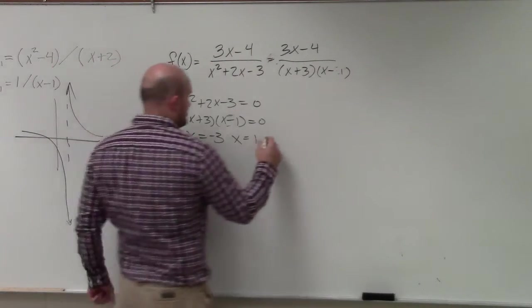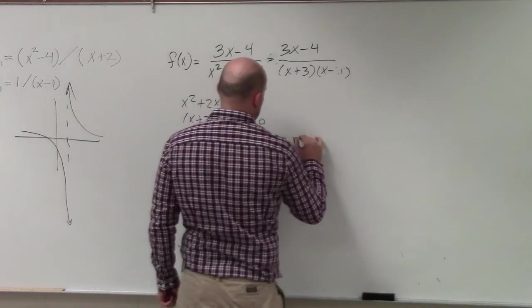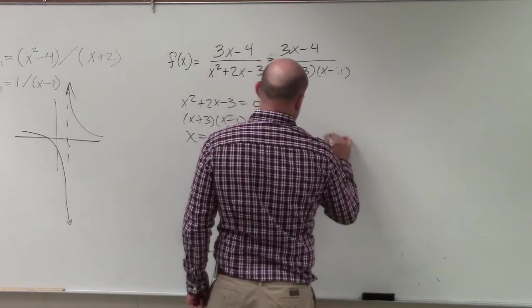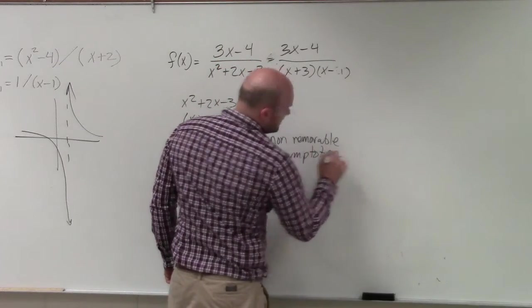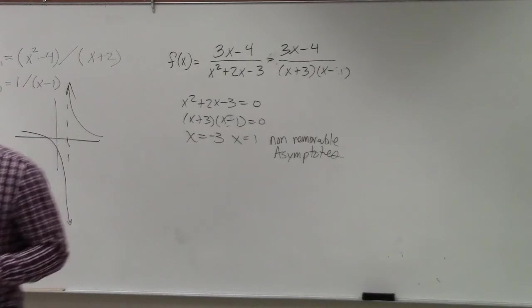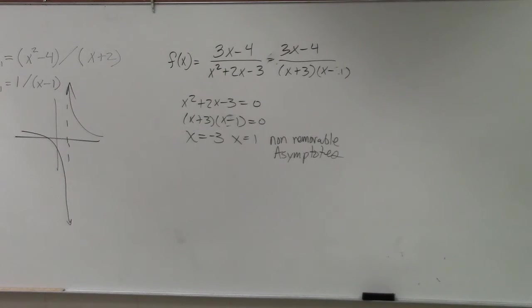So now, these are non-removable asymptotes. Because if they are removable, they would be holes. So what that means is if we're going to look at the graph, the graph should approach these, right?